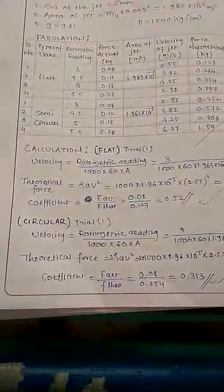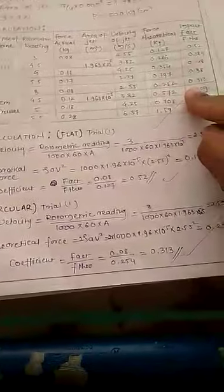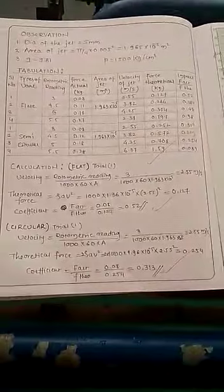This is rotometer reading, this is reading from the digital meter, this is area of jet which you calculate, this is velocity calculated by this formula, and this is theoretical force calculated by this formula. Finally, the impact of jet on vanes. This way we need to conduct the experiment. Thank you.